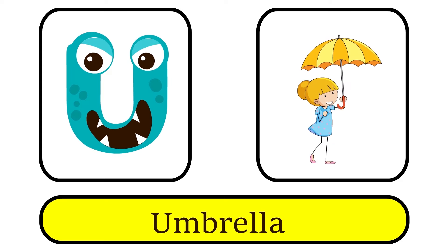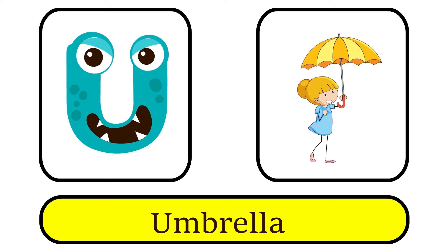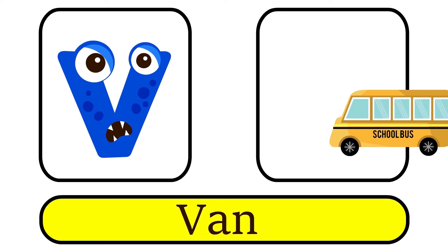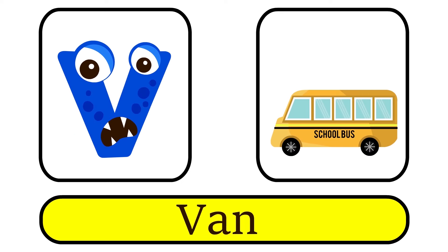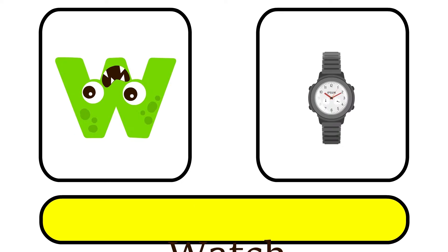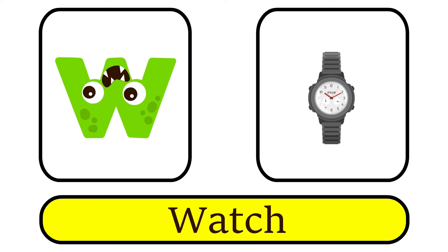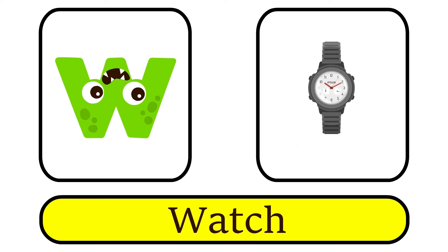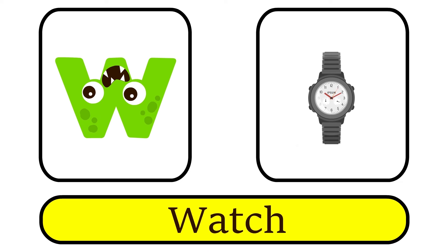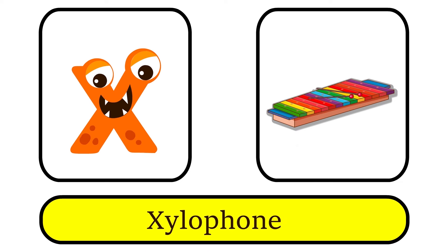U is for Umbrella. A, A. V is for Van. V, V. W is for Watch. Wa, Wa.